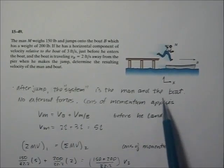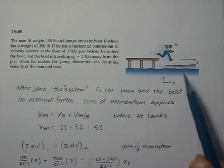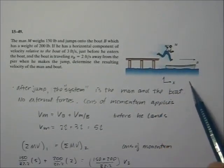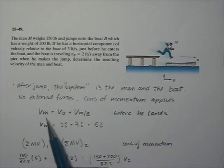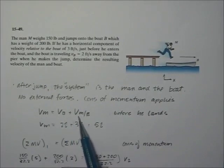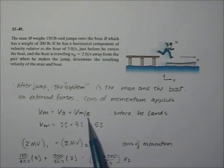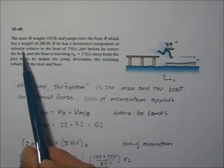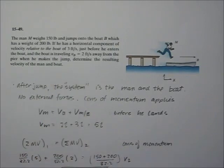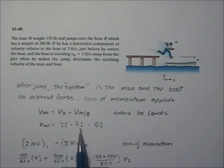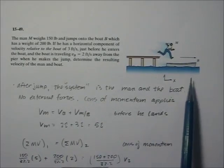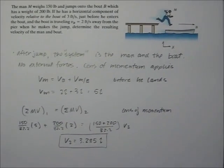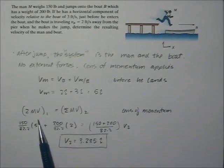After the jump, the system is the man on the boat, and there are no external forces — he's flying through the air, so there are no impulses on him per se. We're going to use the relative equation: the velocity of the man equals the velocity of the boat plus the velocity of the man with respect to the boat. That relative velocity is given in the problem as three feet per second. So the velocity of the man equals two plus three, giving him an actual speed of five feet per second in the i direction.